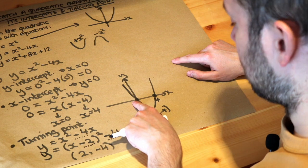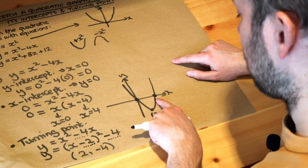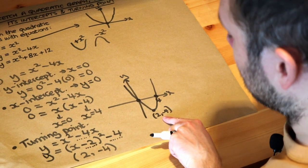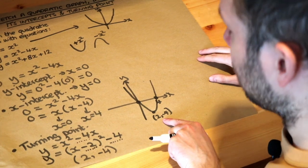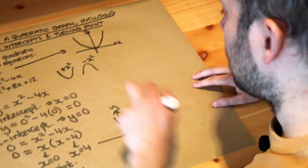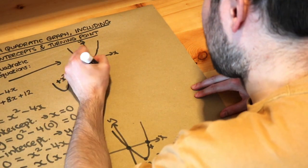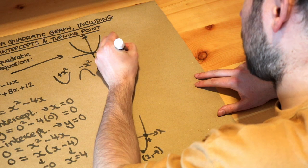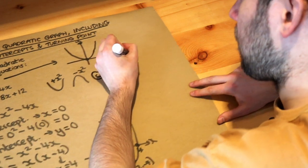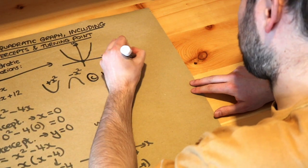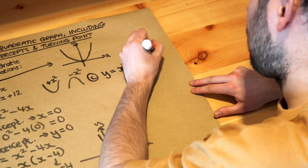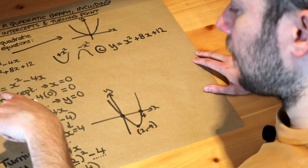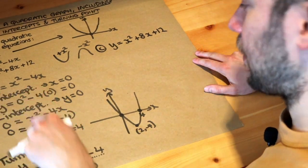So we've worked out the three key points: (0, 0), (4, 0), and the turning point (2, minus 4). Now let's do the second example: y equals x squared plus 8x plus 12. Again we're going to work out the y-intercept, the x-intercepts, and the turning point.